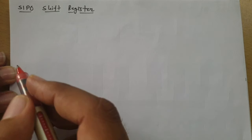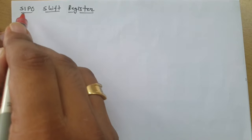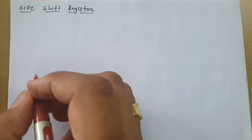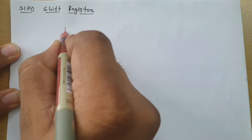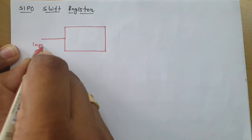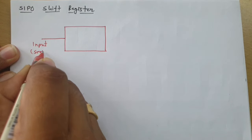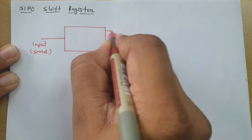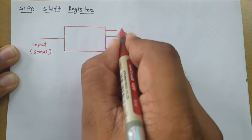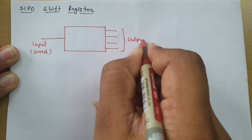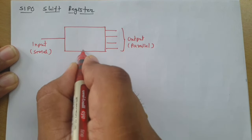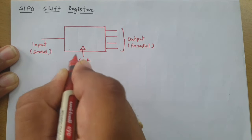Welcome to the digital electronics lecture series. Professor Itesh Dulakia is going to explain Serial Input Parallel Output (SIPO) shift registers. Observing SIPO as a block, we find it has only one input line — the serial input. The output, however, appears on multiple parallel lines with respect to a clock signal provided to the circuit.